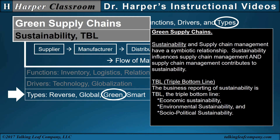Green supply chains. Sustainability and supply chain management have a symbiotic relationship. Sustainability influences supply chain management, and supply chain management contributes to sustainability. The business reporting of sustainability is TBL, the triple bottom line: economic sustainability, environmental sustainability, and socio-political sustainability.